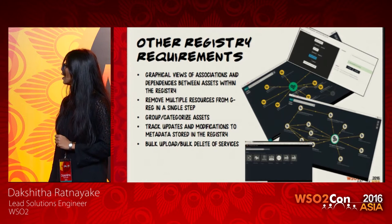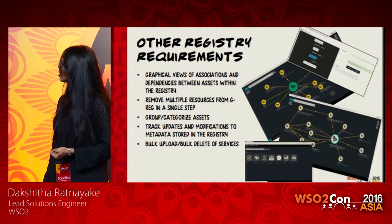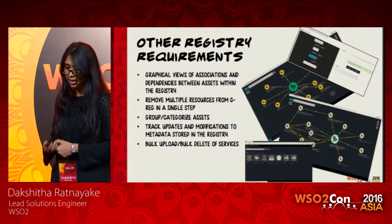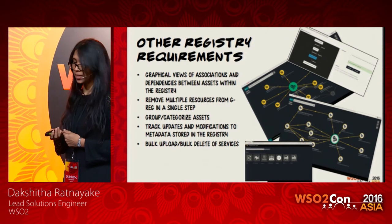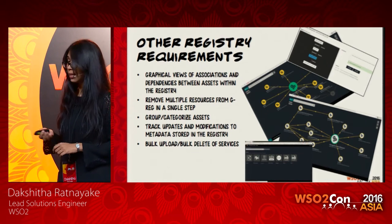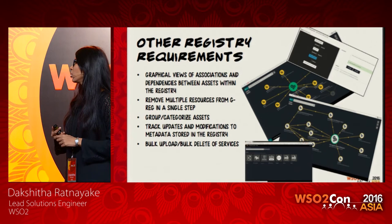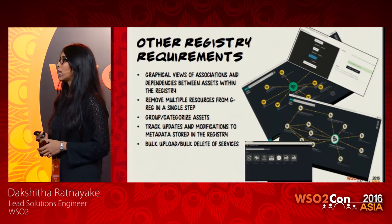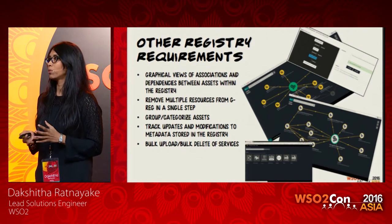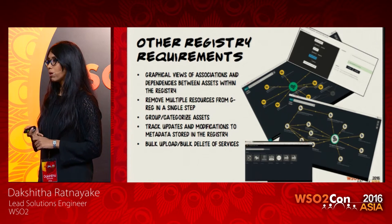They had some other registry requirements: graphical views of associations and dependencies between assets, ability to remove multiple resources from the governance registry in a single step, grouping or categorizing assets, tracking updates and modifications, and bulk uploading and bulk deleting of services. These are some of the new charts and views in the Greg 5 series, and this customer was very significant in shaping the new design for WSO2 governance registry.